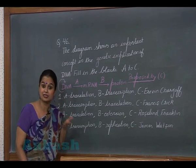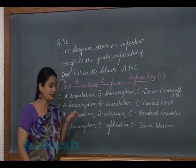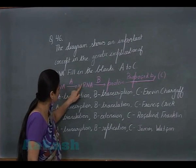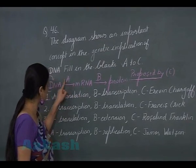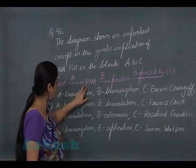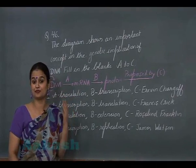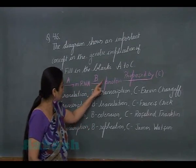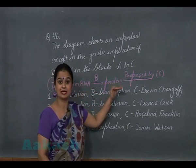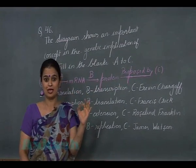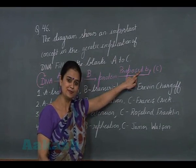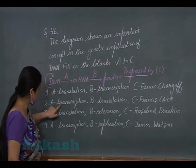DNA is also heterocatalytic, meaning DNA contains information for the synthesis of other molecules. It can form RNA, so DNA contains the information for the synthesis of RNA and this process is known as transcription. So A represents transcription. Messenger RNA contains coded information for the synthesis of protein, and the process involved is translation. This flowchart is known as the central dogma, proposed by scientist Francis Crick.